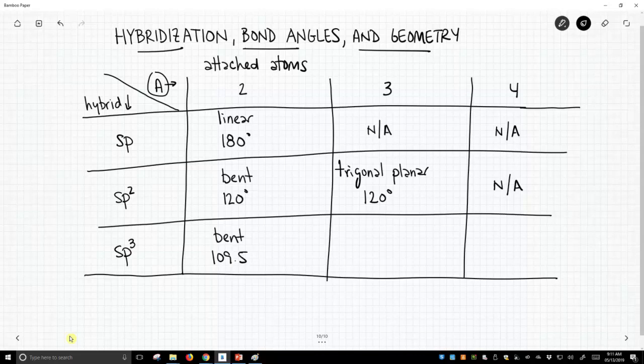If we have three attached atoms and we're sp3 hybridized, this will be trigonal pyramidal and we will have bond angles of approximately 109.5 degrees. And let's put degree signs on there.